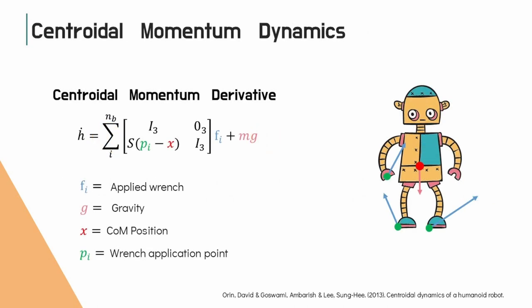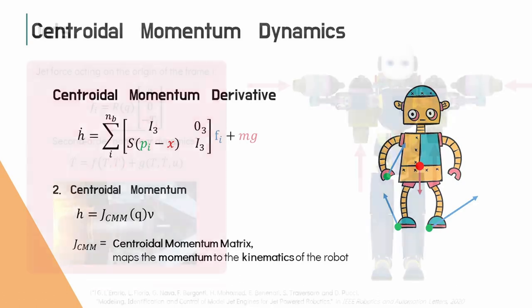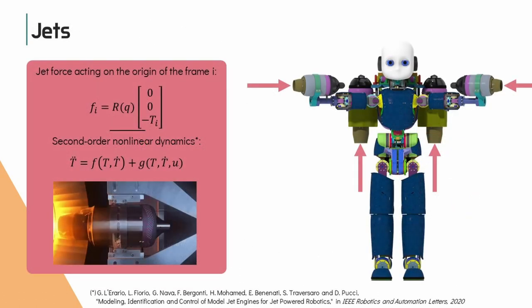The Centroidal Momentum Dynamics is the key model. It connects the evolution of the momentum to the external forces acting on the robot, and bounds the kinematics of the robot to the centroidal momentum. The external forces that actuate the aerial locomotion mode are the jet forces applied on the origin of the jet frames.